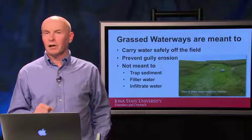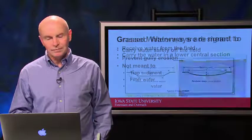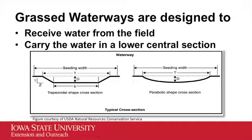Let's talk a little bit about the function of waterways. The grass waterway is there to safely carry water off of the field and down that waterway, while at the same time preventing gully erosion as that water moves. Now, different from a grass filter strip, the waterway is not there to trap sediment, filter water, or infiltrate and soak up the water as it moves. Grass waterways are designed specifically to carry water, so they're built with a cross-section that moves water off the field through a lower central portion of the waterway.